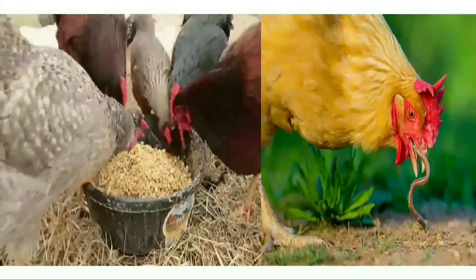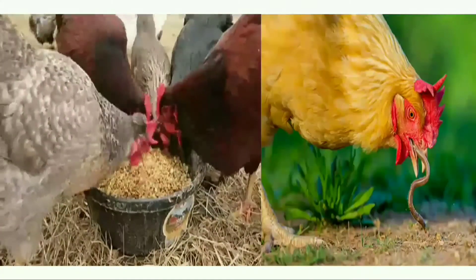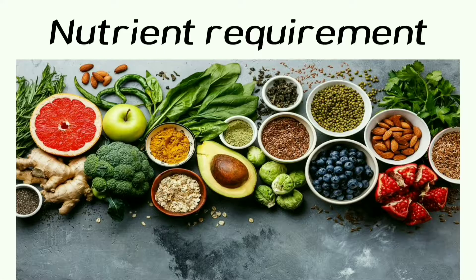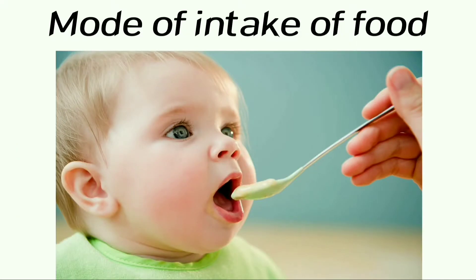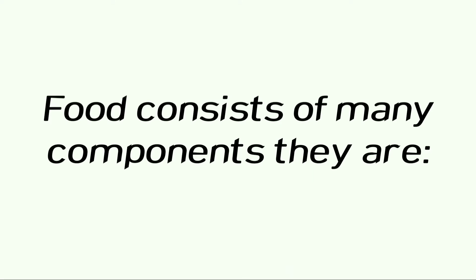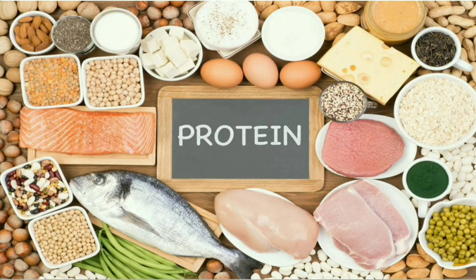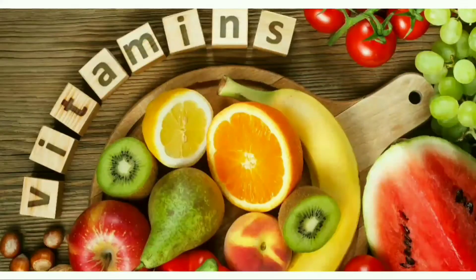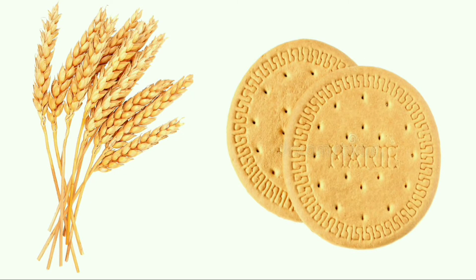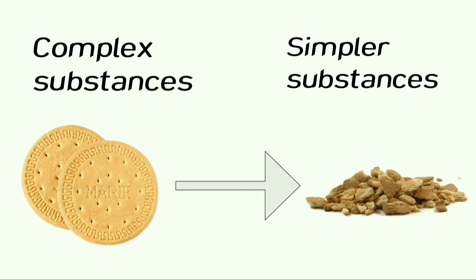Some organisms eat both plants as well as animals. All living organisms require food for their growth, repair, and functioning of the body. Animal nutrition includes nutrient requirement, mode of intake of food, and utilization in the body. Food consists of many components: carbohydrates, proteins, fats, vitamins, minerals, and water. Carbohydrates are complex substances that cannot be utilized directly.